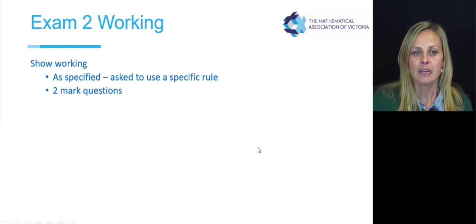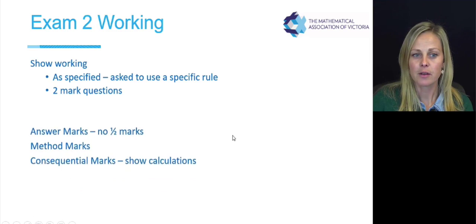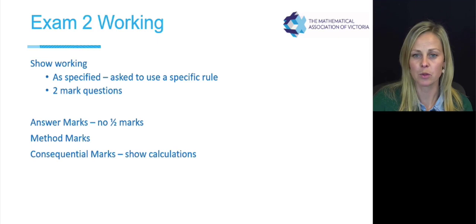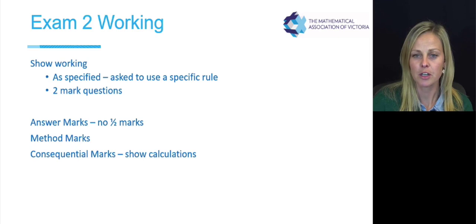So exam two working. You will need to show some working in exam two. If you are asked to use a rule, if it says use your cosine rule or use your sine rule or use recursion, you have to use that and I should be seeing that in your working. A two mark will normally require some kind of working that we'll be looking for. A one mark though might also have a bit of working that you'll need to show, especially as there's lots of questions with one mark that will say use recursion to show that the second year has this amount of money in a bank account.